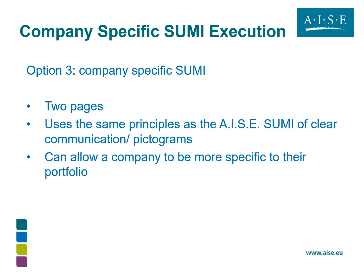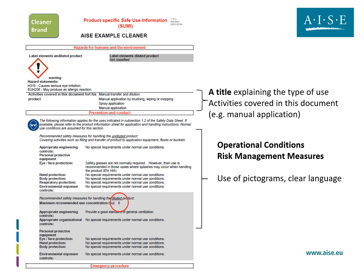For option three, we have a company-specific SUMI. It is also two pages long, just like the AISC SUMIs, and it uses the same principle of clearly communicating information using clear, simple sentences and pictograms, but allows the company to be more specific to their portfolio. As you can see, the elements in this example are very similar to those of an AISC SUMI: a title explaining the type of use and activities covered, a section on operational conditions and risk management measures, and the maximum recommended concentration — something you wouldn't be able to include in an AISC SUMI because those documents are created as a standard.